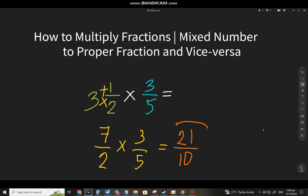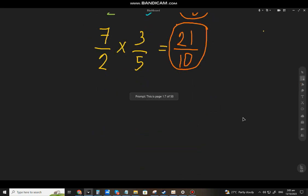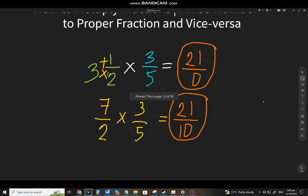Lowest term na ba ito? Hindi na. Ito na yung lowest term. So 21 over 10, ang sagot sa 3 and a half times 3/5. You have to change talaga muna sa improper fraction yung mixed number, bago mo siyang i-multiply.